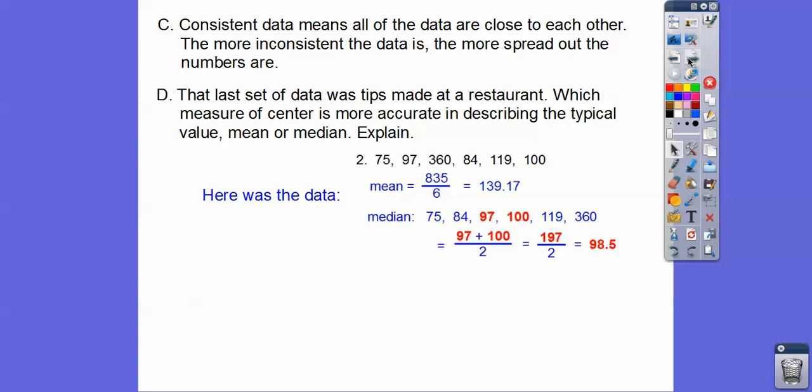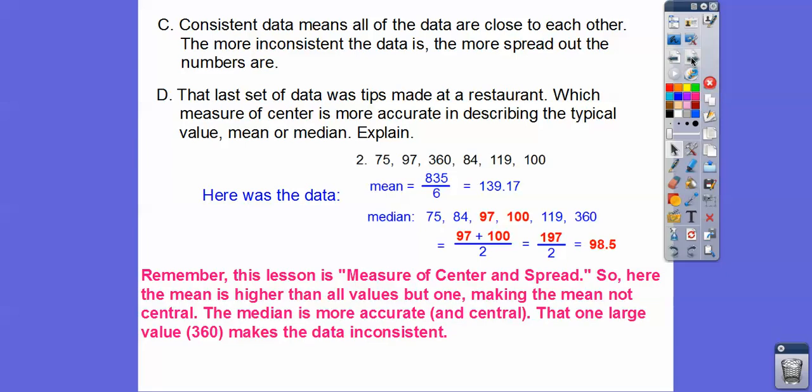Well, here's that data right here. So here's the mean, the mean was 139.17, and the median was 98.5. Which one's closer to the rest of the data? Well, this 360 really threw it off right there. So this lesson on measures of the center and the spread, here the mean is way higher than all the values except that one value, making the mean not central to the rest of the data. It's not in the middle. The median is a more accurate and central number right there. So that one large value, which was 360, made that data inconsistent right there.